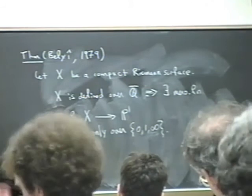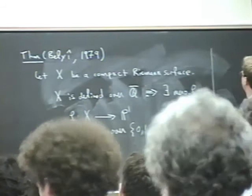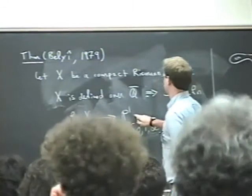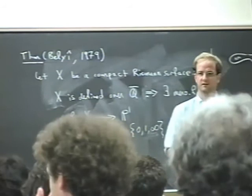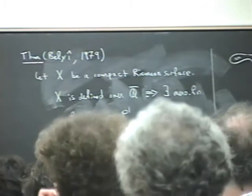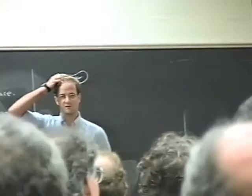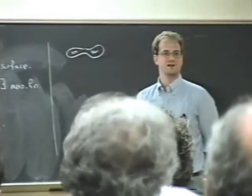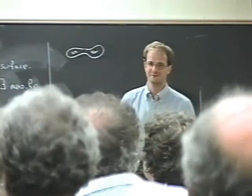You can do it in a first or maybe a second semester algebra course modulo one step. The idea of the proof is if you have such a function, you can think of P1 with these three points as being color of the upper half plane white and the lower half plane black, and then you can regard those as equilateral triangles.